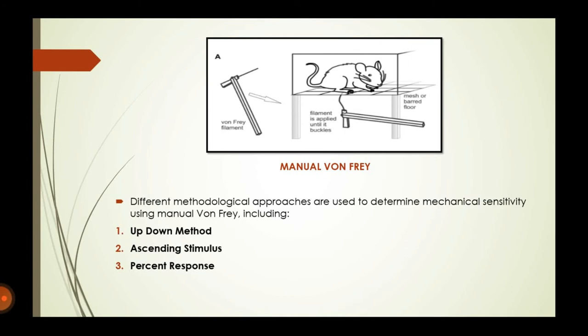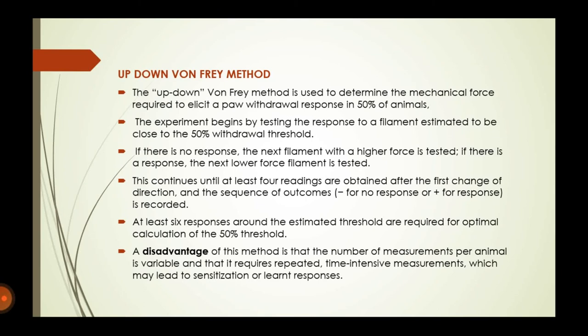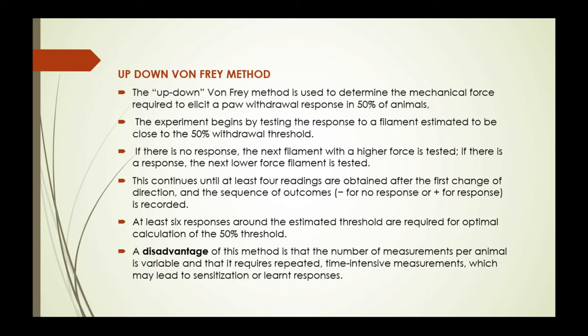Different approaches are used to determine mechanical sensitivity using manual Von Frey, including the up-and-down method, ascending stimulus method, and percent response method. The up-and-down method determines the mechanical force required to induce paw withdrawal in 50% of animals. The filament is applied with a force close to the 50% withdrawal threshold.